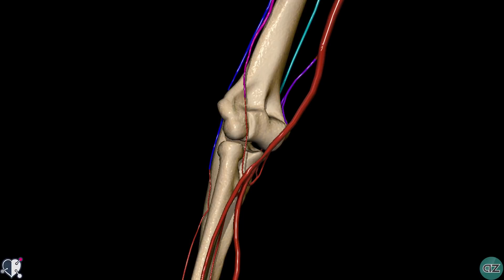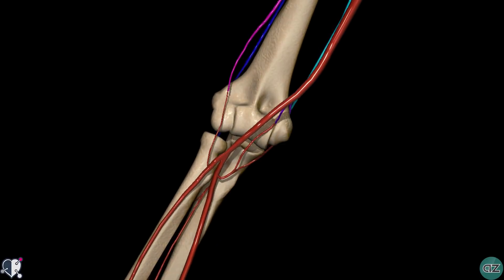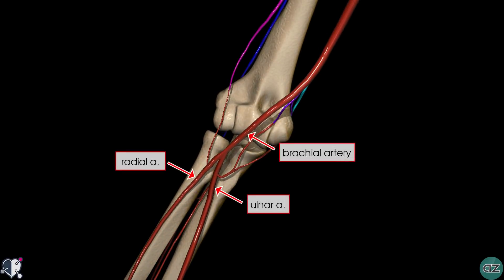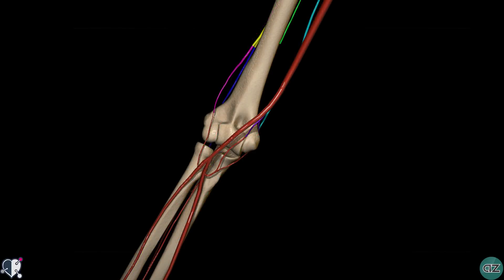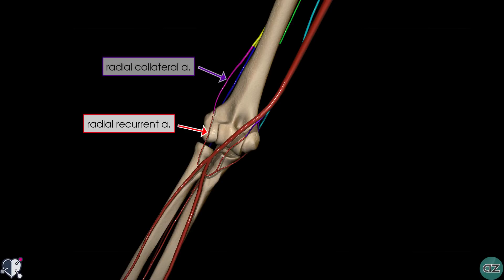As we saw before, the brachial artery terminates by dividing into the radial and ulnar arteries. The radial artery begins at the neck of the radius and passes laterally along the forearm. In this part of the tutorial, we'll just look at the proximal branches of the radial and ulnar arteries, and cover the distal branches in the next part when we cover the arterial supply to the hand and the wrist. Proximally, the radial artery only has one branch: the radial recurrent artery, anastomosing with the radial collateral artery.